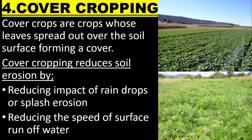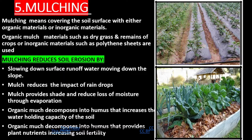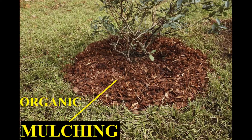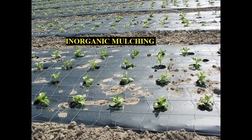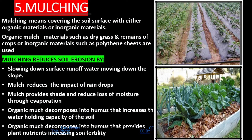Mulching means covering the soil surface with either organic or inorganic materials. Organic mulch materials such as dry grass and crop remains, or inorganic materials such as polythene sheets, are used. Mulching reduces soil erosion by slowing down surface runoff water moving down the slope and reducing the impact of raindrops.